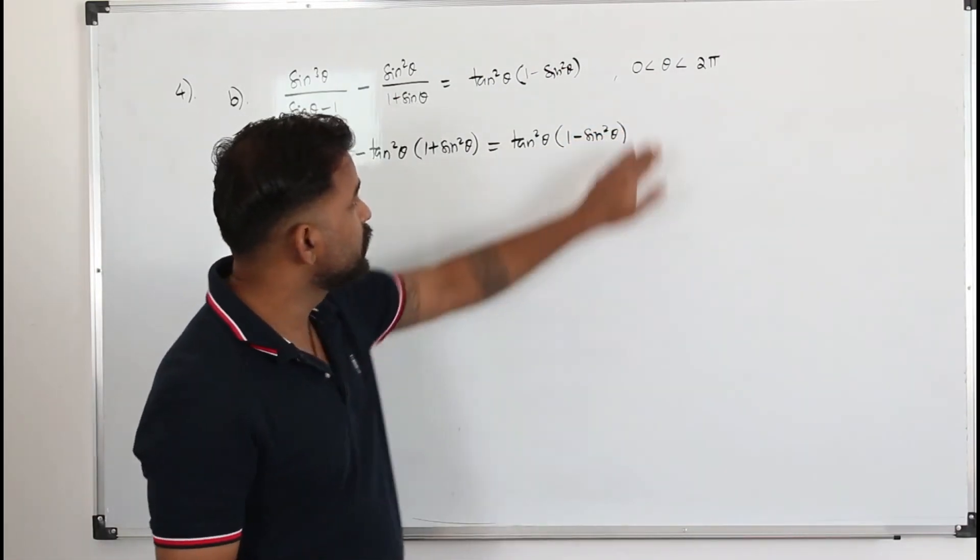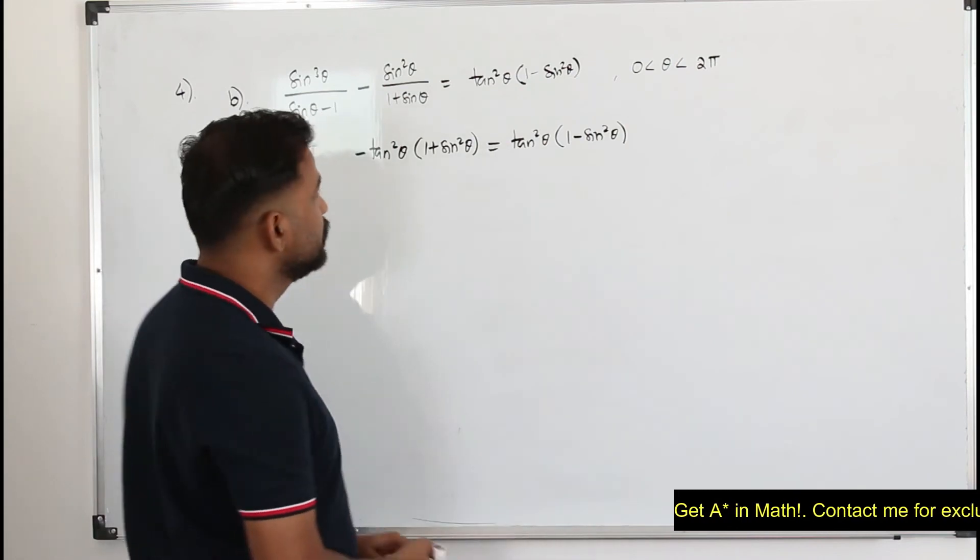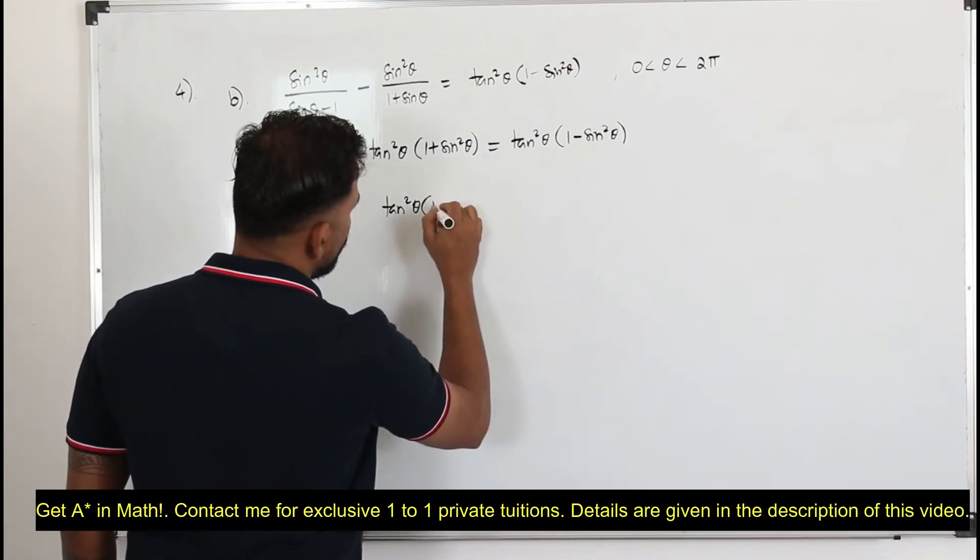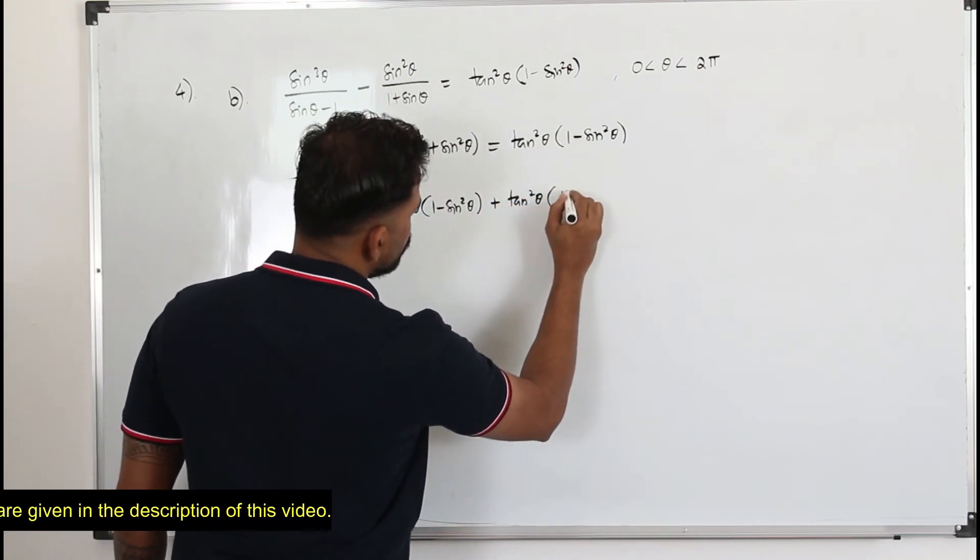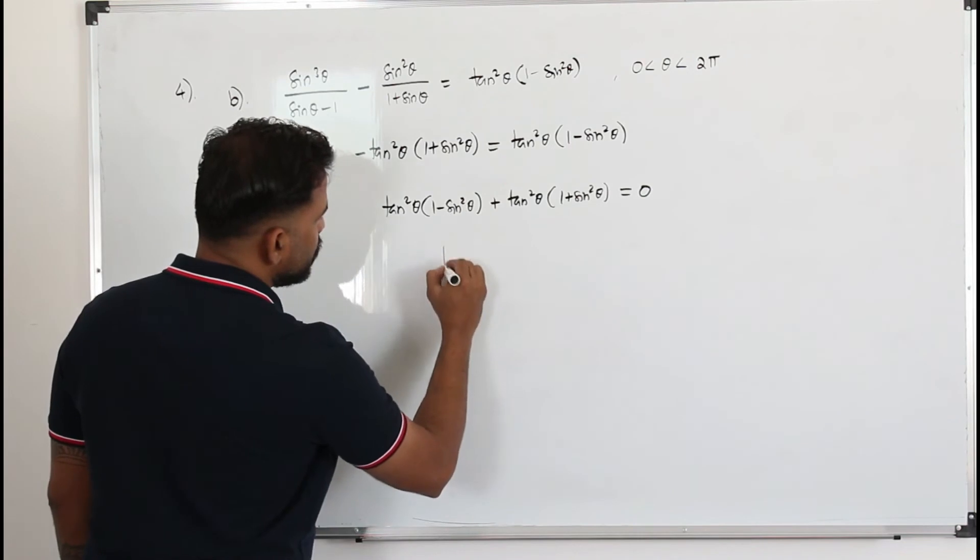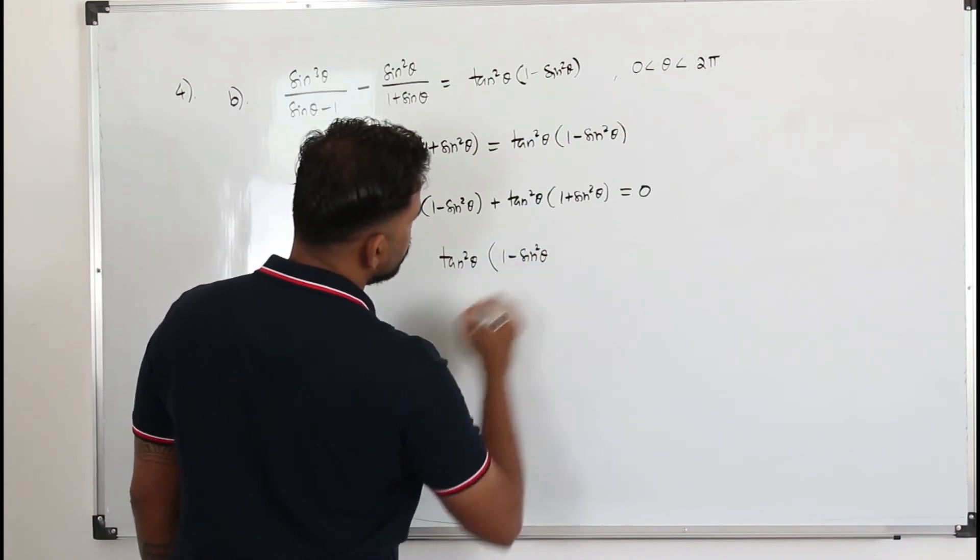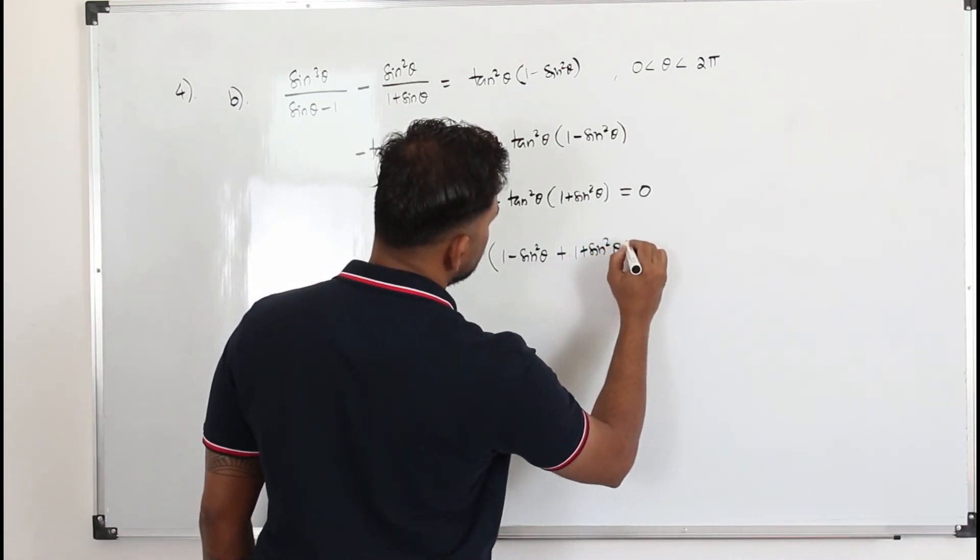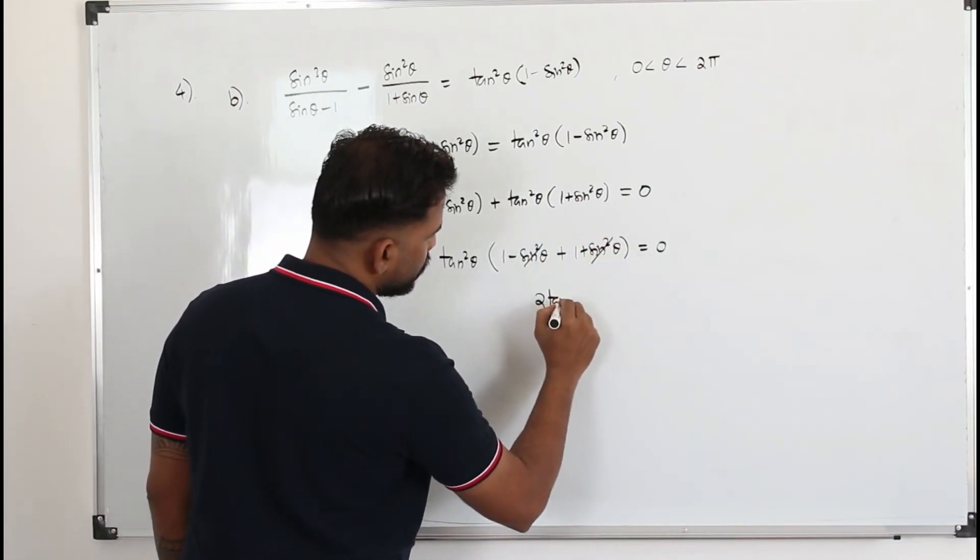So we are going to solve this equation. The limit is very important. Do not ignore this limit. The limit is 0 to 2π. We are going to use that later. Now first step, put everything one side. You will get tan²θ(1 - sin²θ). Bring this term also here, it becomes positive. tan²θ(1 + sin²θ) = 0. I'm going to take tan²θ as a common factor out. So you will have (1 - sin²θ) + (1 + sin²θ) = 0. So sin²θ can be cancelled. You will get 1 + 1 = 2. So 2tan²θ = 0.